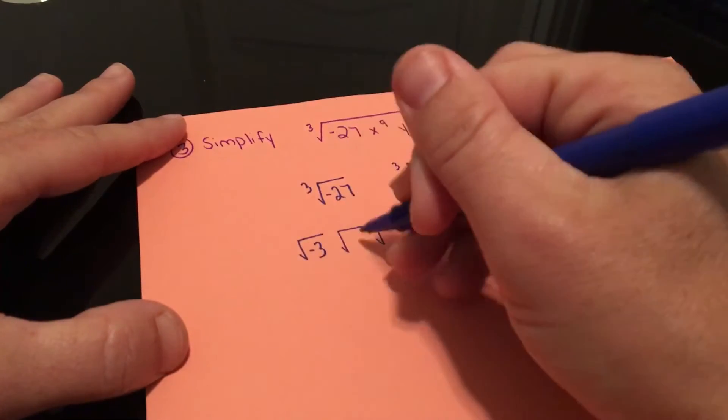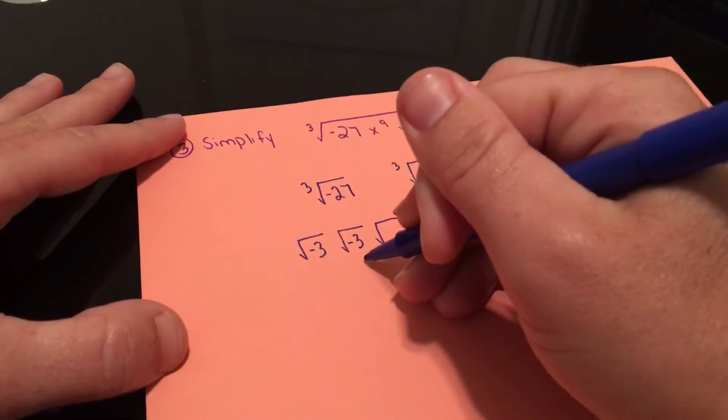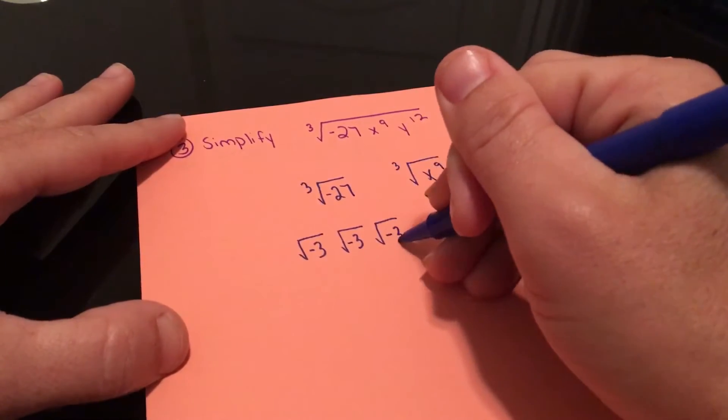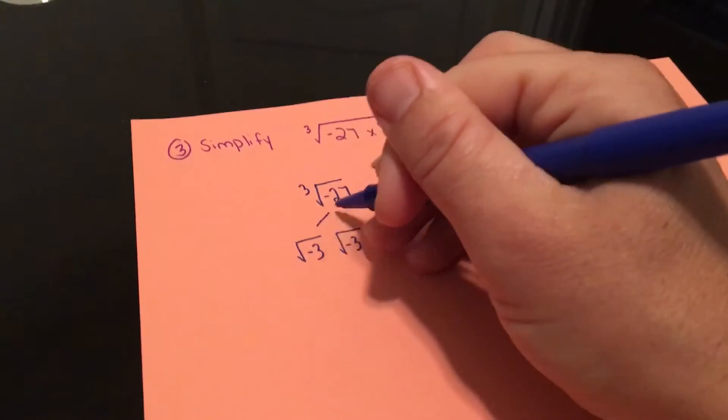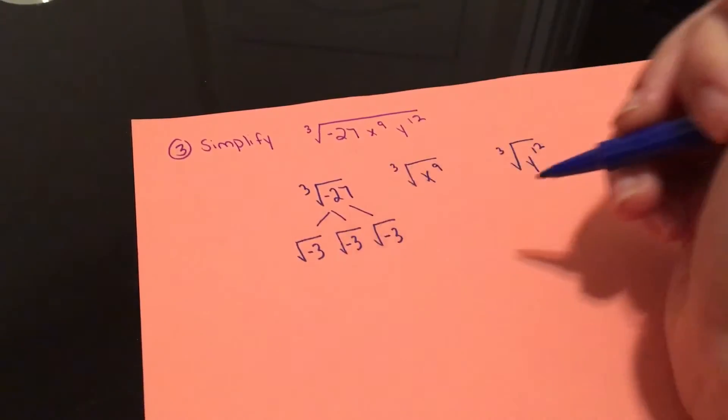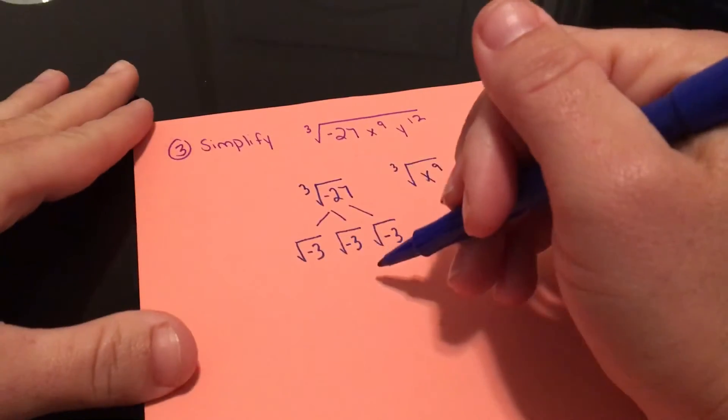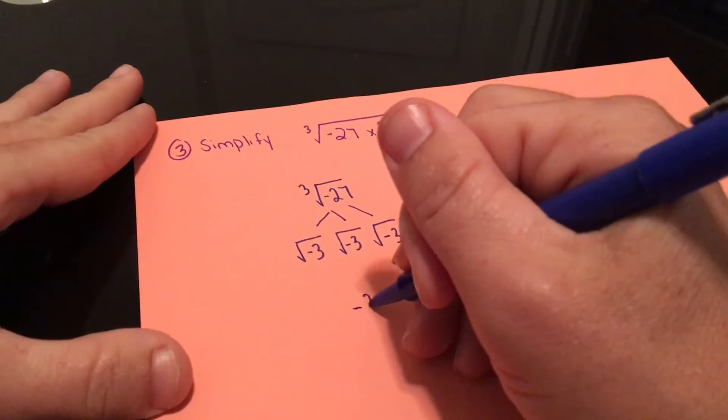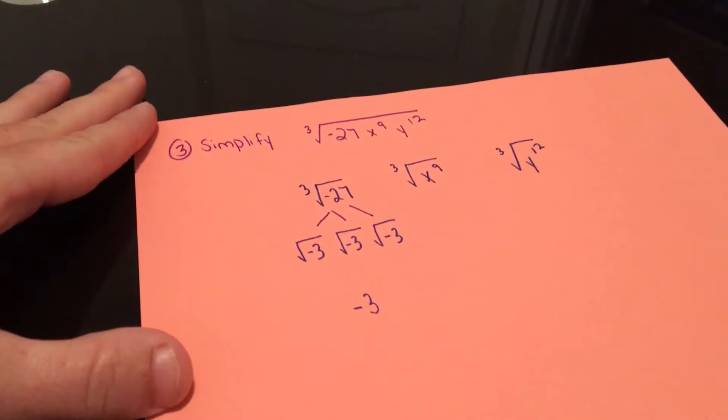This is a negative 3 times a negative 3, which would give you that positive 9. But then if we multiply it again by another negative, that would give us a negative 27 there. So this would be a negative 3 for my cube root of negative 27.